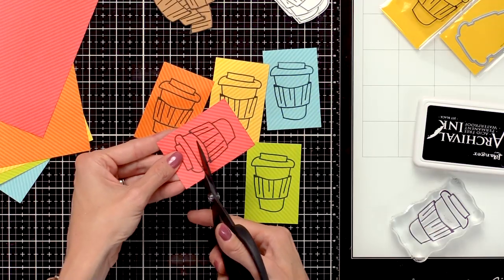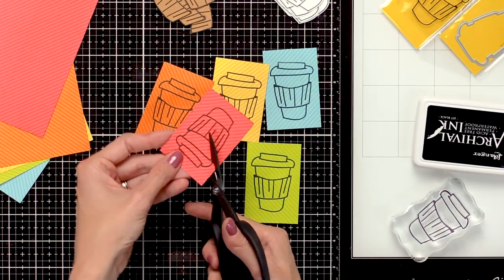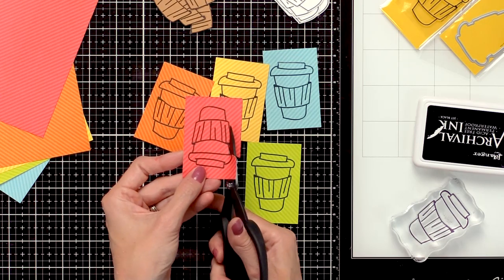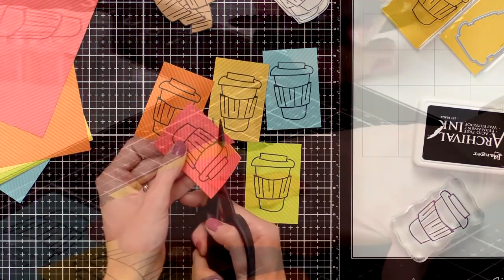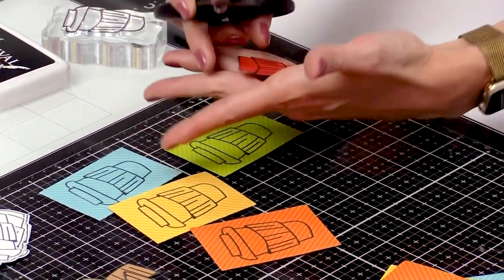Again, I'm going to cut right along that black line. I'm going to cut around the cozy too but you could just cut that part off. I'll now repeat this process for the other 4 coffee cups.